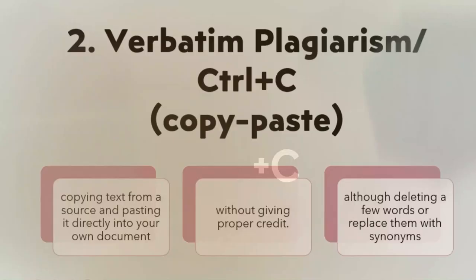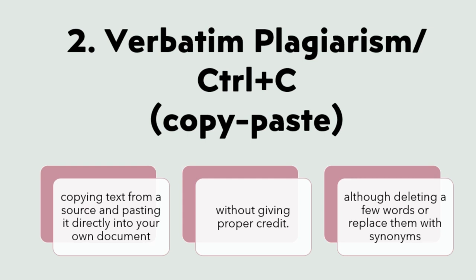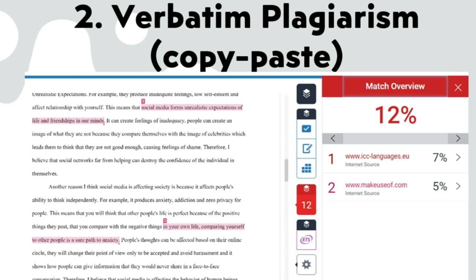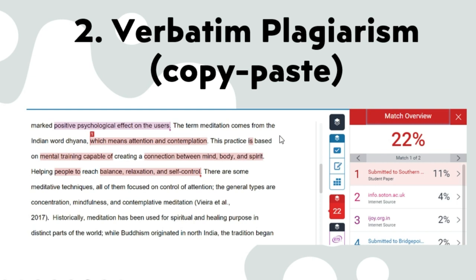The second type of plagiarism is verbatim plagiarism, or what some people also call Control C, because the student goes and copies and pastes information from another source onto his or her own paper. Also, instead of citing and giving proper credit to the source, the student does not cite the source and goes to just replace a few words here and there with some synonyms. Still, the software is going to detect this type of plagiarism. In this example, you can see that the student chose to take complete sentences and copy and paste them to their own paper. Another example shows that the student copied a sentence and replaced a few words with synonyms. Therefore, this is a clear example of verbatim plagiarism.